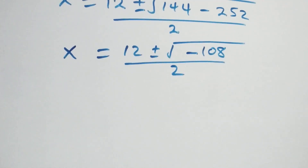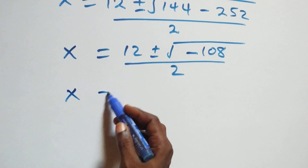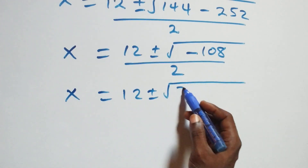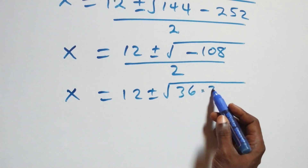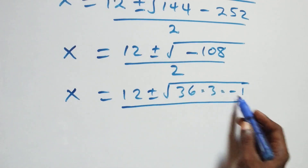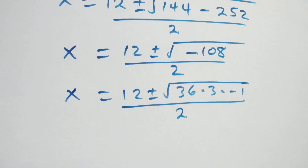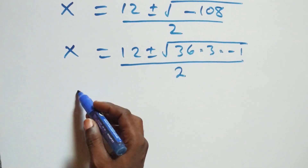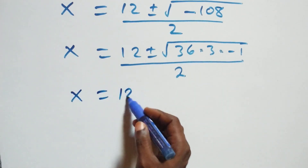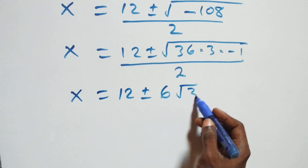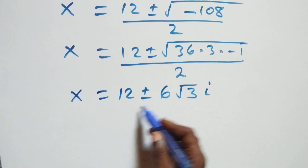We can write this as x equals 12 plus or minus square root of 36 times 3 times minus 1, all over 2. Taking root 36 out as 6, we have x equals 12 plus or minus 6 times root 3 times i, all over 2.